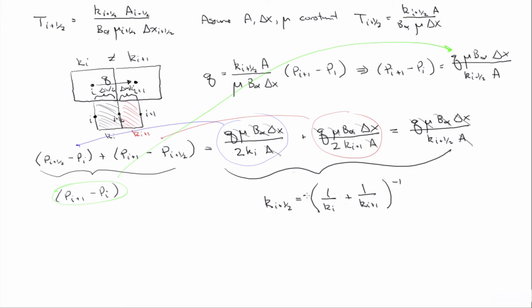Then what you get is k i plus a half, rather—that's what we're solving for—is equal to 1 over k i plus 1 over k i plus 1 inverse. Ah, 2, there's a 2 out front. So that is our k i plus a half, this is our interblock transmissibility, and this is called the harmonic average.